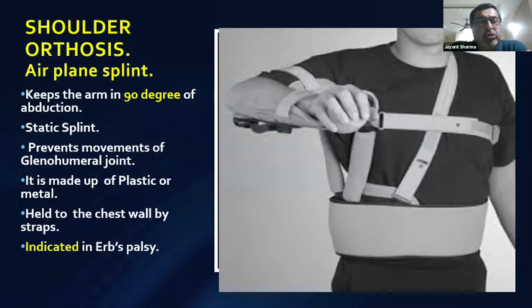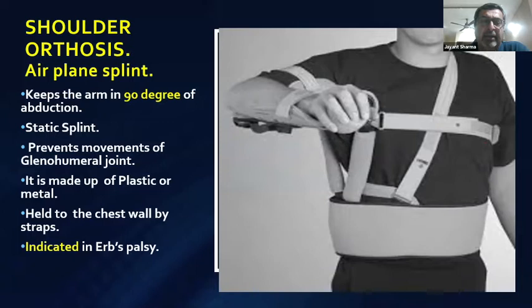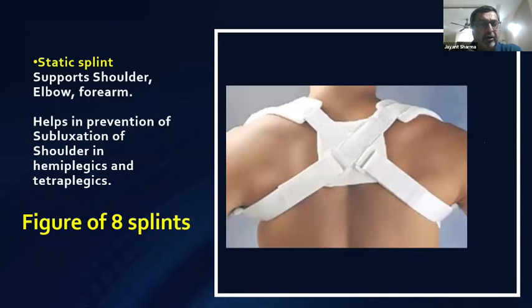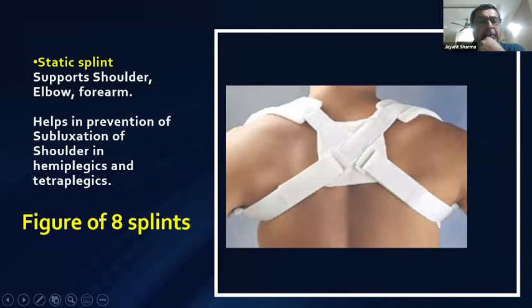Coming to upper limb orthosis: the shoulder orthosis, also known as an airplane splint, keeps the arm at 90 degrees of abduction and is a static splint. When describing a splint in examinations, state the name, whether static or dynamic, its indication, and then describe the spatial characteristics. This splint is indicated in Erb's palsy and is made of plastic or metal, held to the chest wall by straps. Another static splint is the figure-of-eight splint, also called the Neat's clavicular brace, which supports the shoulder and helps prevent subluxation in hemiplegia and tetraplegia.